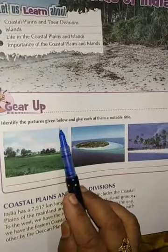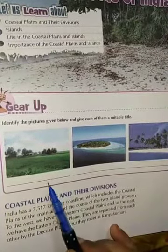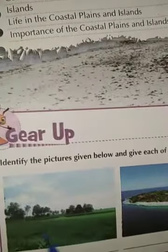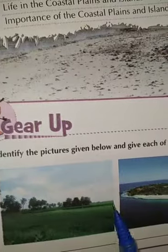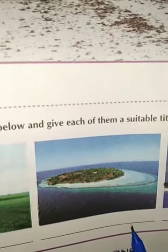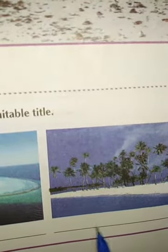Some activity is given in your book. Some figures are given here — identify the picture given below and give each of them a suitable title. You have to identify each picture and write the answer in the space provided. The first image shows a plain area, so you can write 'plain.' The second shows land surrounded by sea on all sides — that is called an island, so write 'island and sea.' The third is a plain near the sea, so write 'coastal area' or 'coastal plains.'